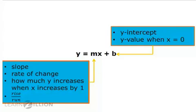Recall that m is our slope, our rate of change. It's how much y increases when x increases by 1. And we can calculate it in a graph using rise over run.